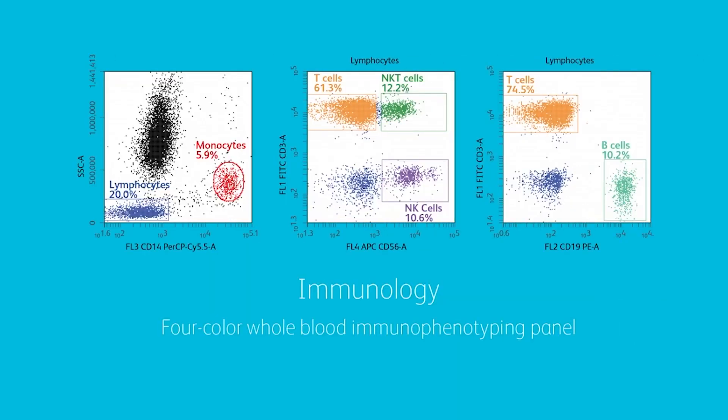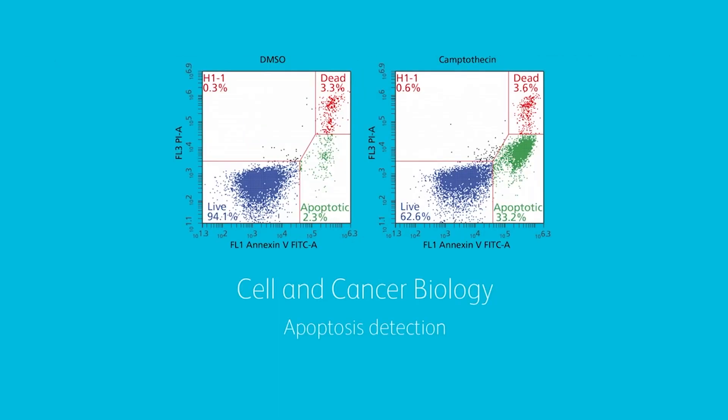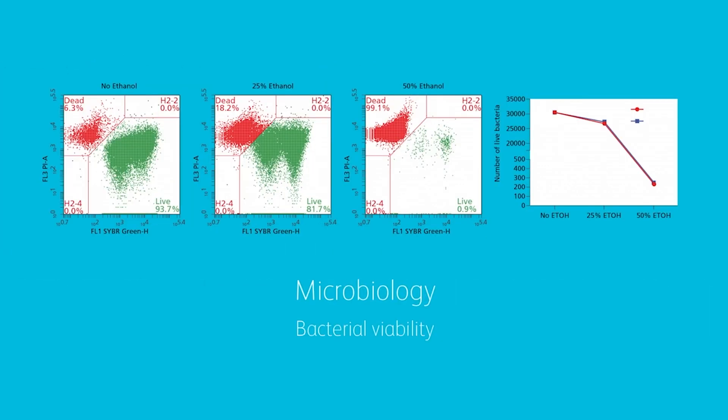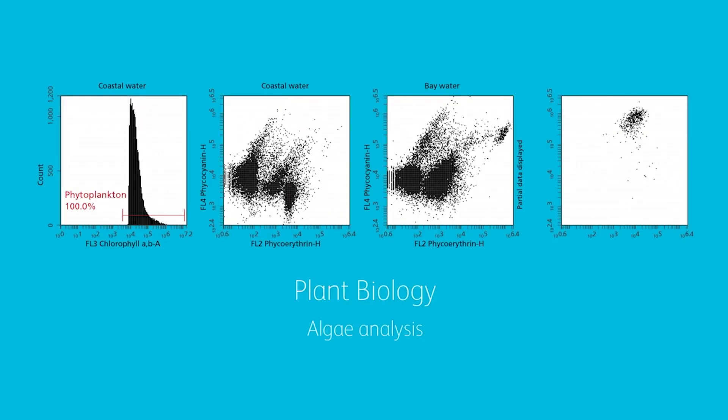The BD Accuri platform is ideal for a wide array of flow cytometry applications. With sensitive performance, automated quality control, data reproducibility, and reliability, it's an essential tool for your research lab.